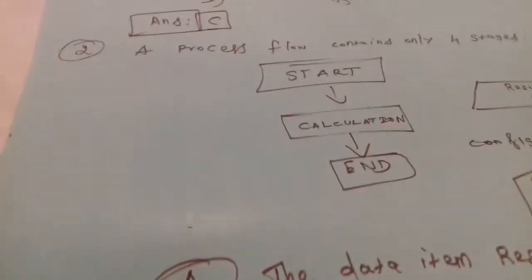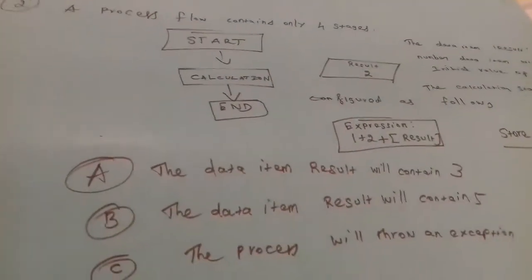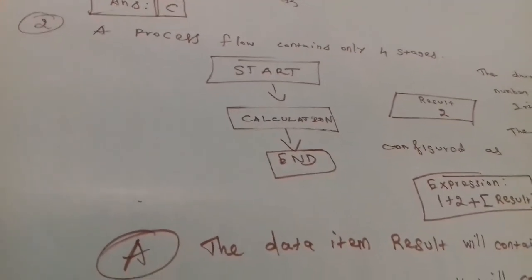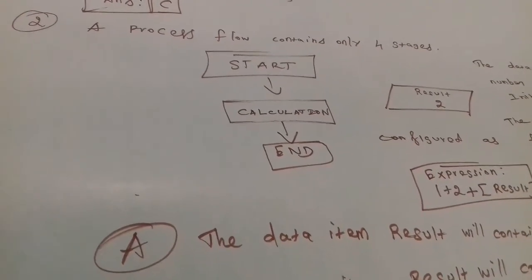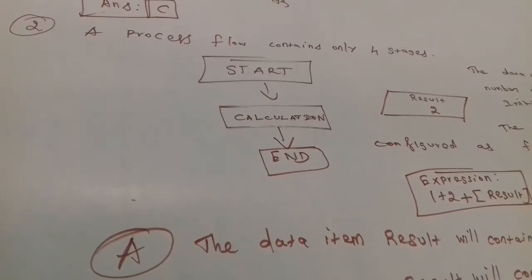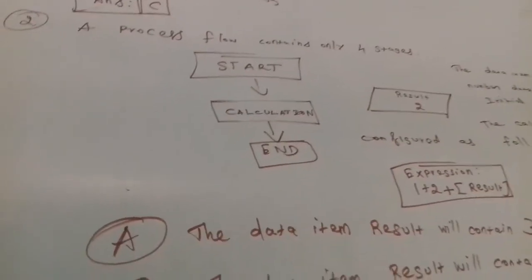The second problem in Blue Prism is usually in certifications, interview questions, or basics. When you do a process flow, think your process flow has only four steps.